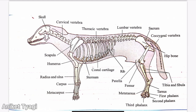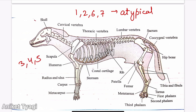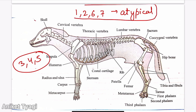The cervical vertebrae can be divided into two types: typical and atypical. Vertebrae 1, 2, 6, and 7 are atypical — they have different shapes and sizes. The remaining vertebrae, 3, 4, and 5, are typical and have similar shapes and sizes. We will discuss 3, 4, and 5 collectively, and 1, 2, 6, and 7 separately.